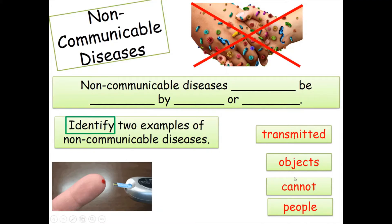You've got four keywords and you need to fill in the blanks. Once you've done that, I want you to identify two examples of non-communicable diseases — do not use liver disease, as we've just gone through that one. So two other examples of non-communicable diseases. Pause the video and fill in the blanks and do your examples.